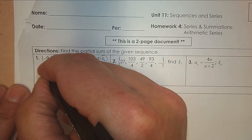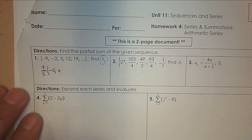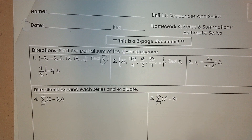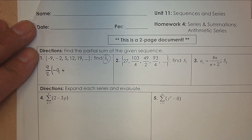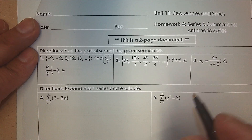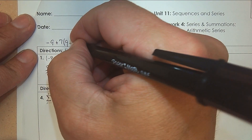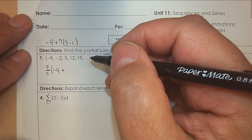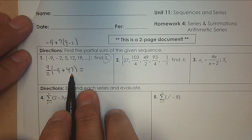So I go nine, divide it by two. Then I need to know the first term and the last term. But do I know the last term? No. So I need to find the last term first. To find the ninth term, I need a formula: A1 plus — I'm going up by seven each time, and I'm trying to find the ninth term. Eight times seven is 56, take away nine is 47. So it's negative nine plus 47, divided by two, times nine.